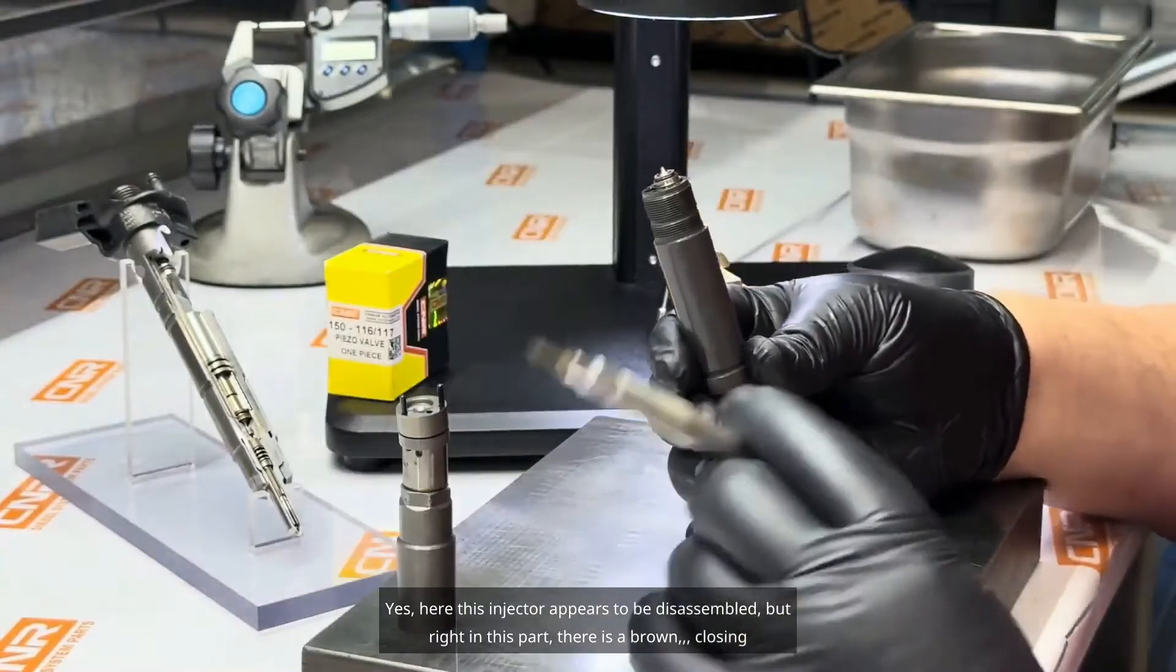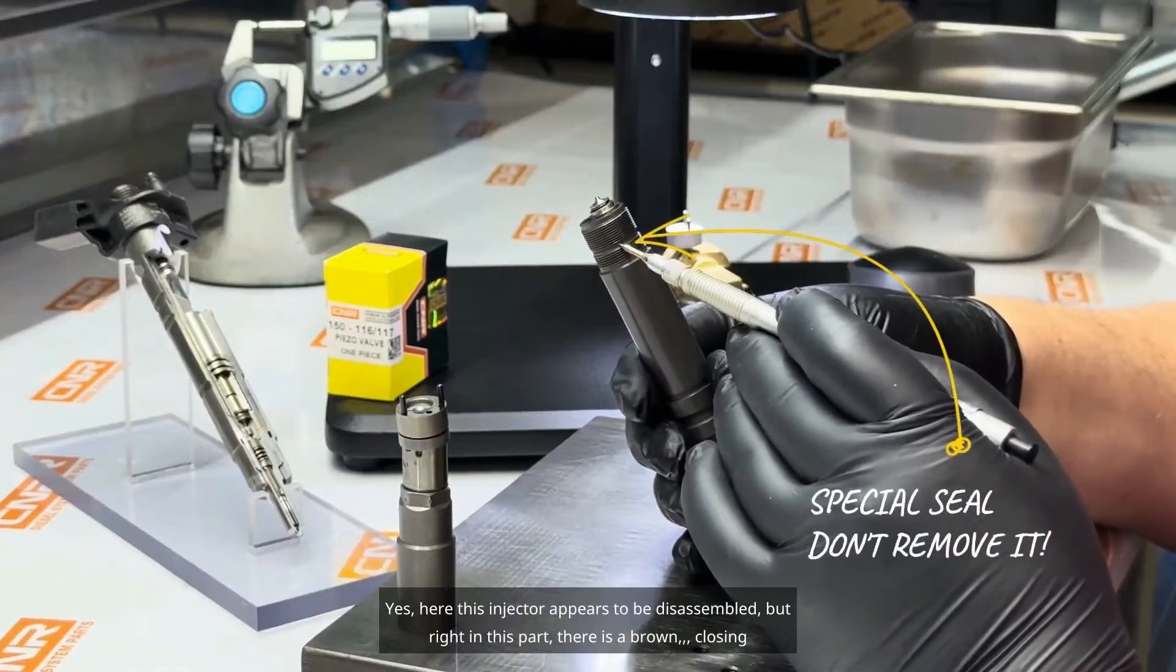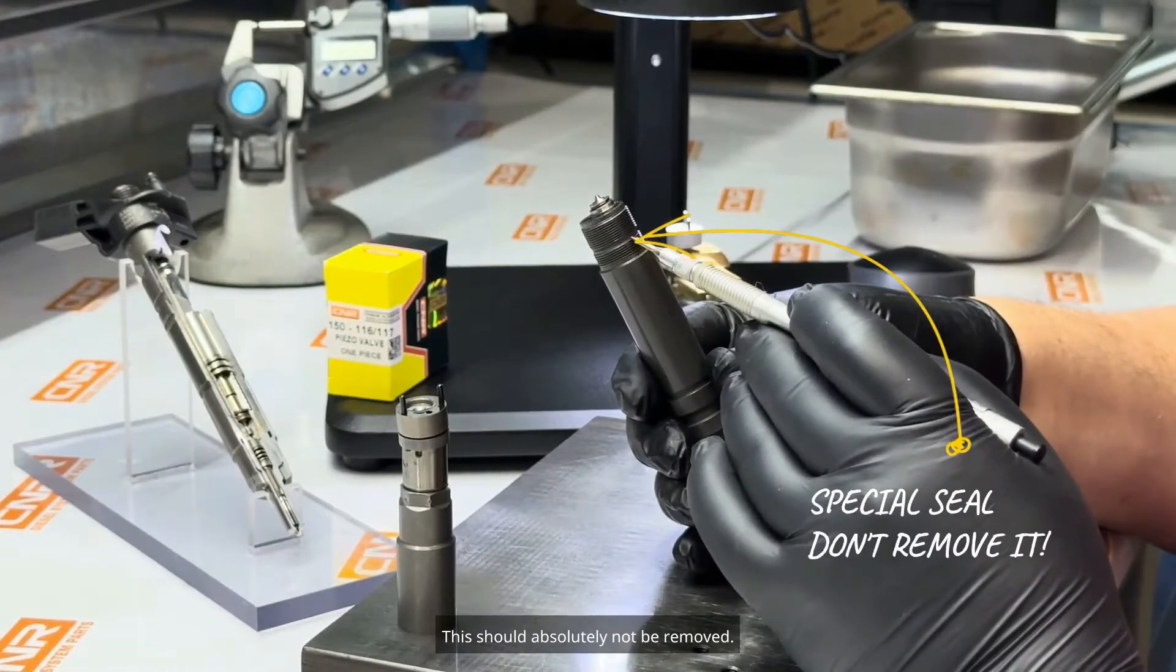Here this injector appears to be disassembled, but right in this part, there is a brown closing gasket. This should absolutely not be removed.